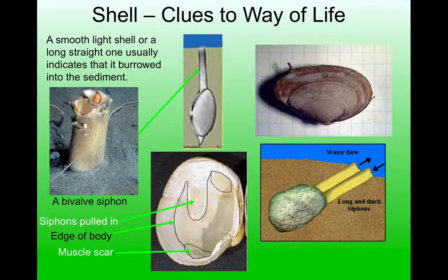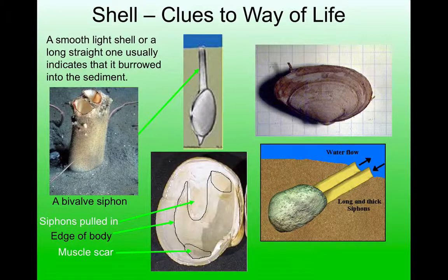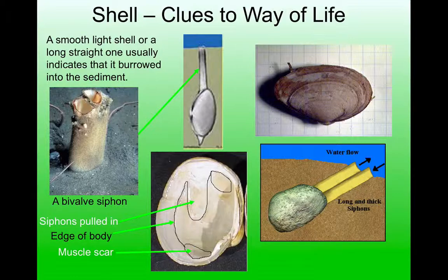We can actually see evidence of the siphon — even though it's a soft part — preserved in the fossils. Looking at the image, you can see two muscle scars: these are where the muscles that control the opening and closing of the shell are attached to the inside of the shell. There's also a line marking the edge of the body called the paleal line. On a burrowing bivalve, there is a large indentation in this line — that's where the siphon would be withdrawn into the shell. This feature is called a paleal sinus and is indicative of a burrowing mode of life.